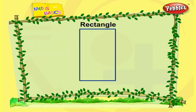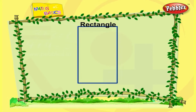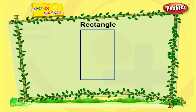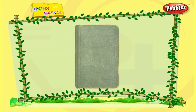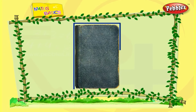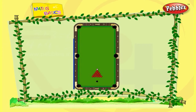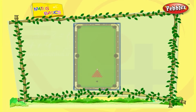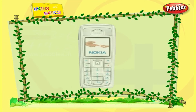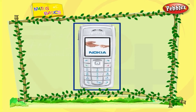This is rectangle. Let us see some objects in rectangle. This is a book. Table. Cell phone.